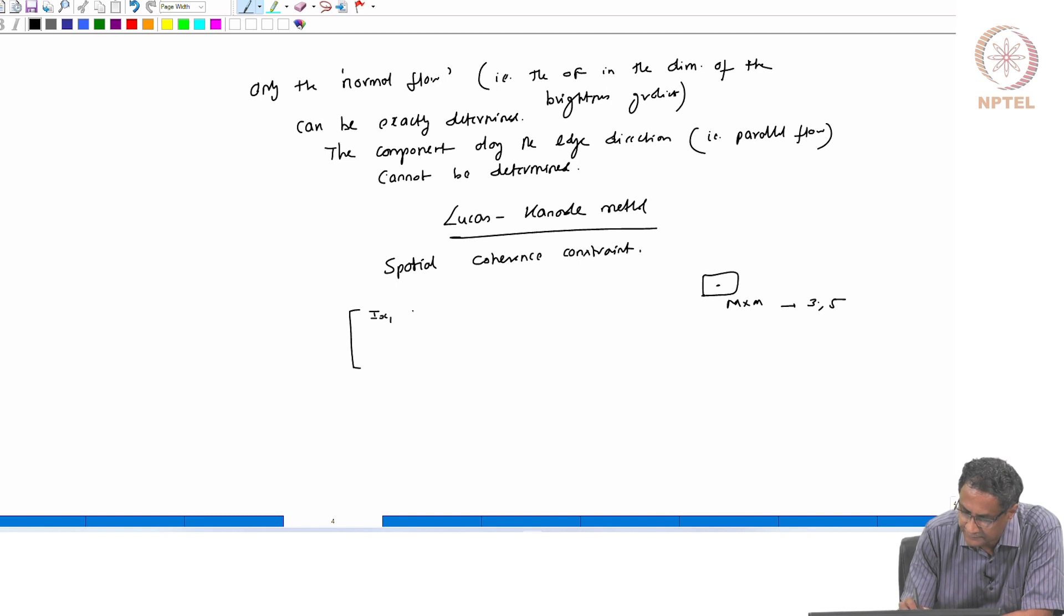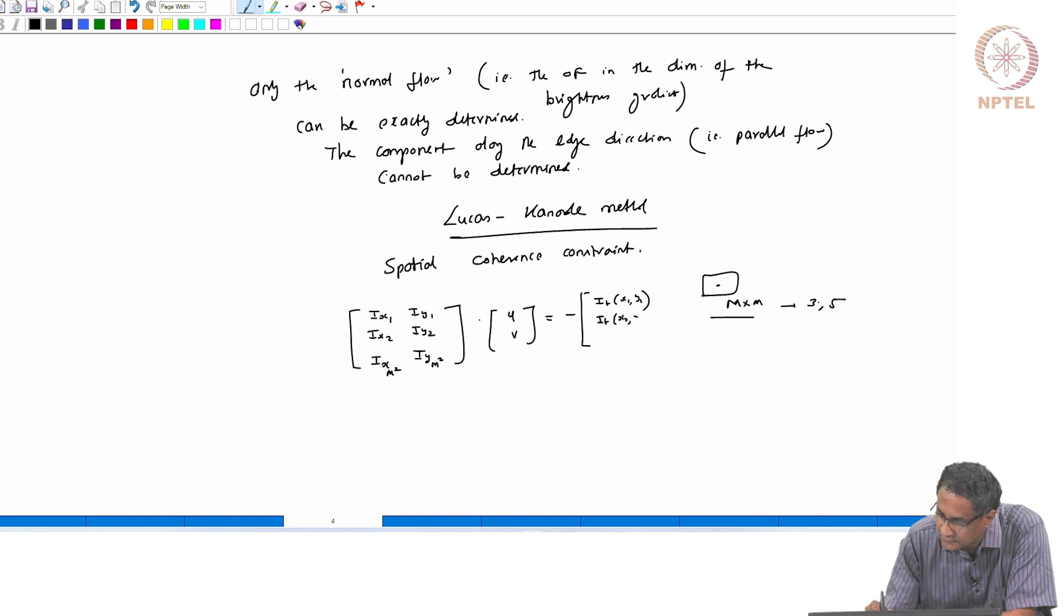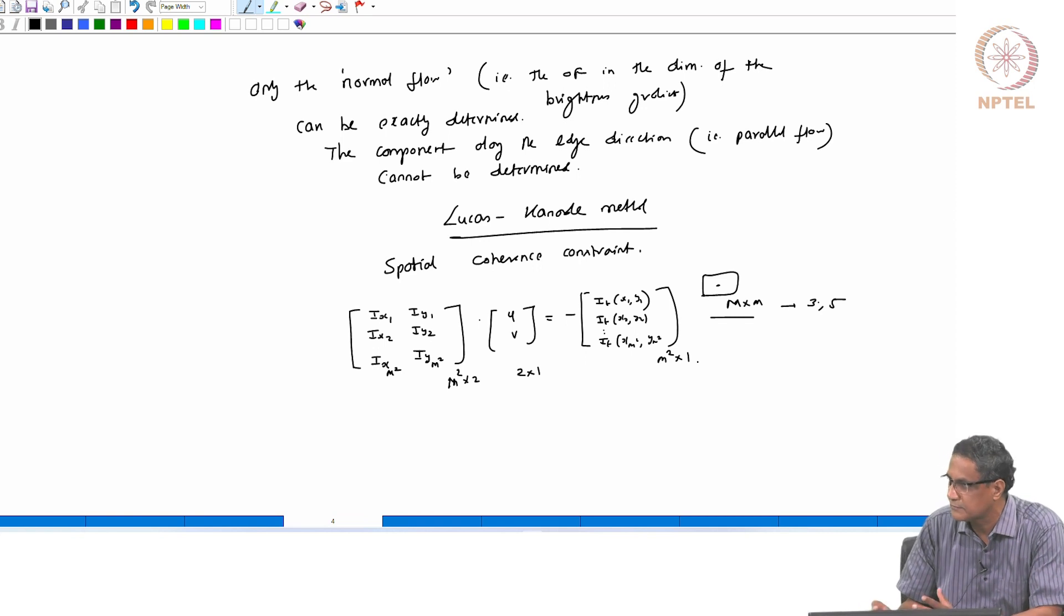Then what you will get is let's say i_x1, i_y1, then I will have like i_x2, i_y2 all the way up to let's say i_x m square, i_y m square. I mean there are m square pixels here, and then I have u v, because all of them will actually satisfy the same equation, but then here I will have i_t of x1, y1 because the temporal motion need not be the same for these pixels. And then i_t of x2, y2 all the way up to i_t of x m square, y m square. So, in effect, what you have is a matrix of size m square by 2, 2 cross 1 and this will be like m square cross 1 and all this we can of course estimate just from the image data. So this is available.